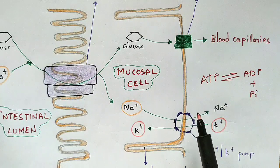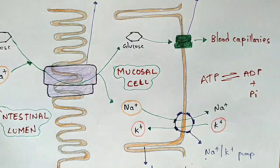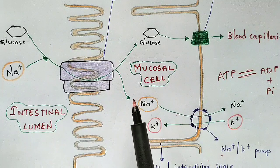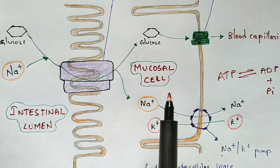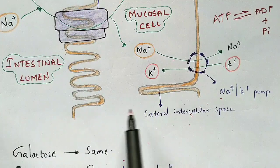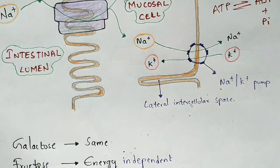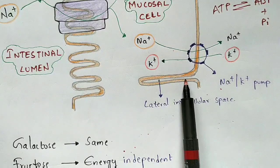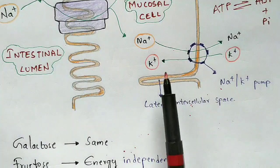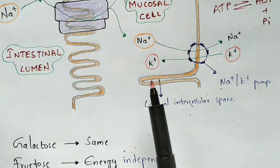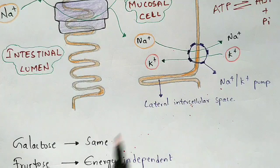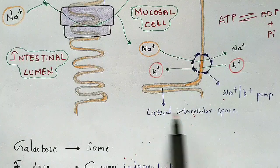Not only one unit of glucose transporter is present — there are many units of sodium dependent glucose transporters arranged one below another. The space present between each of these sodium dependent glucose transporter units is called the lateral intercellular space. This lateral intercellular space differentiates each transporter unit from the next.